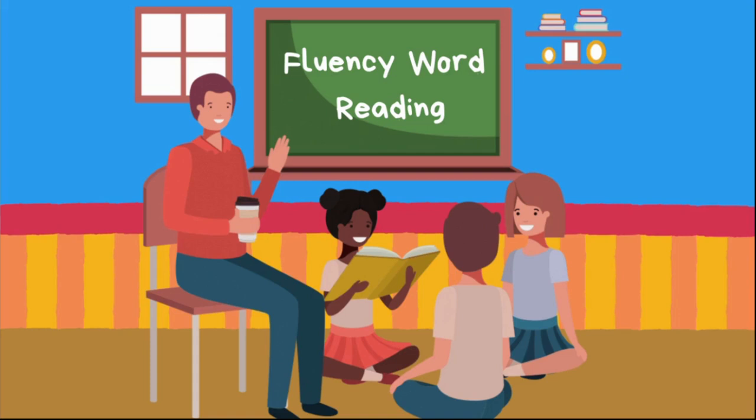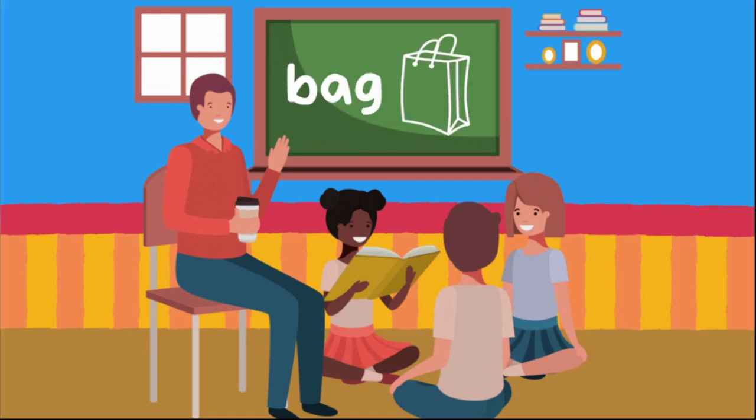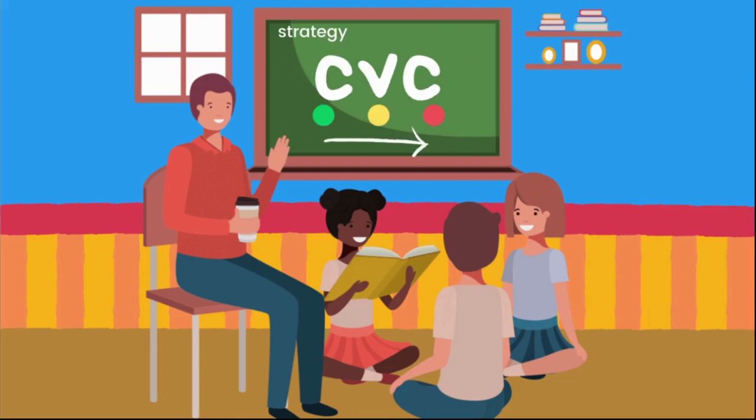In this activity, we're going to work on our fluency word reading. When we're able to fluently read words, that simply means that we're able to read those words correctly. And just in case we come across a word that we're not sure of, it's okay to use our strategy of touching each sound and then sliding those sounds together until we're able to hear the whole word.